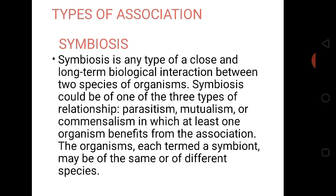So we are going to look at types of association. Symbiosis is any type of a close and long term biological association between two species of organisms. Symbiosis could be one of three types of relationship, such as parasitism, mutualism or commensalism, in which at least one organism benefits from the association. Each organism, termed a symbiote, may be of the same or of different species.